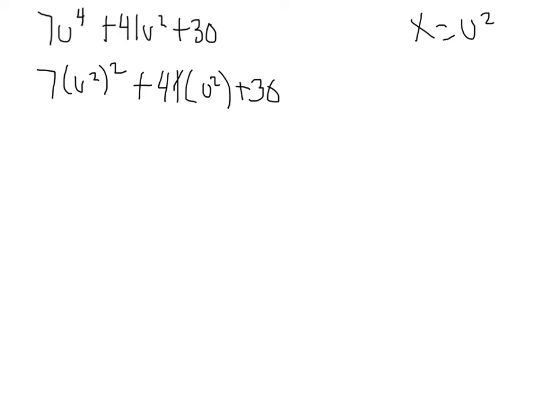And then you can substitute the u squared for the x now. So it would be 7x squared plus 41x plus 30. And then you can factor like it's a regular equation. So you can do 7 times 30 which equals 210. And your factor pairs that will add up to get 41 and multiply to get 210 is 35 and 6.